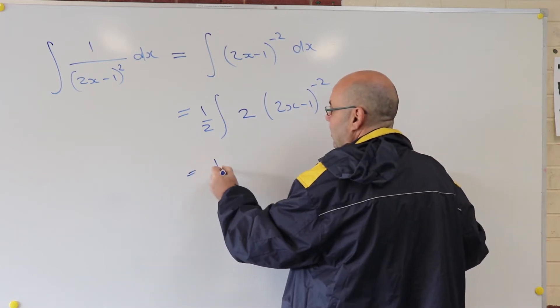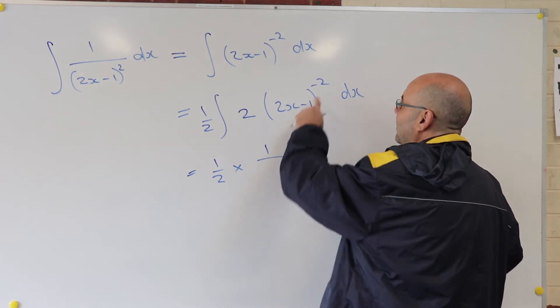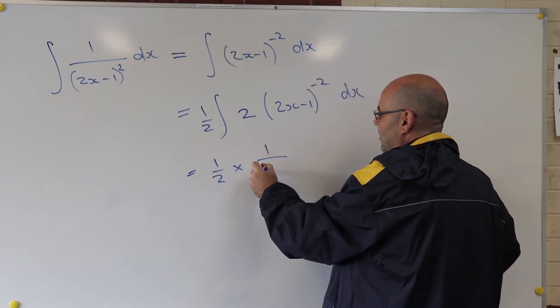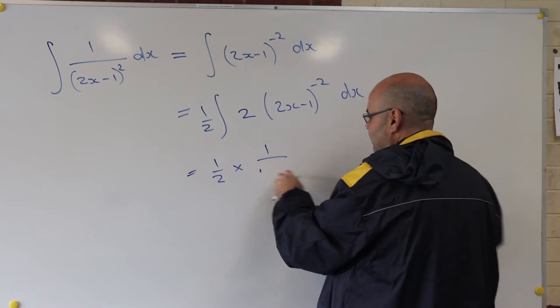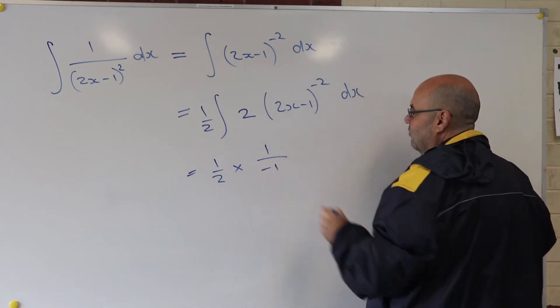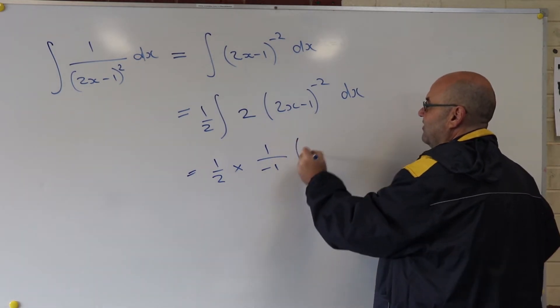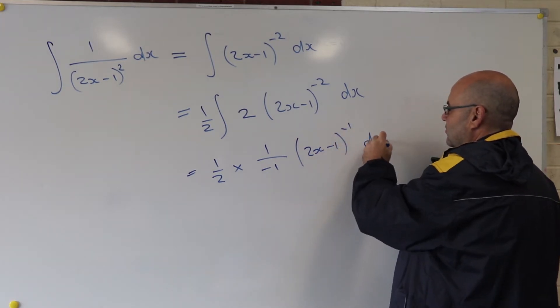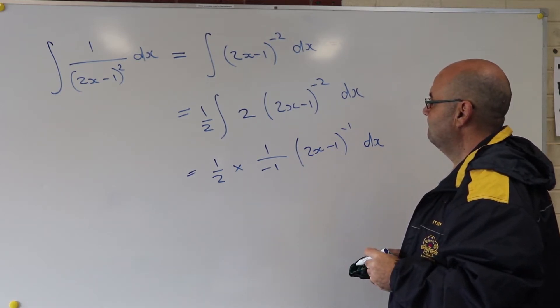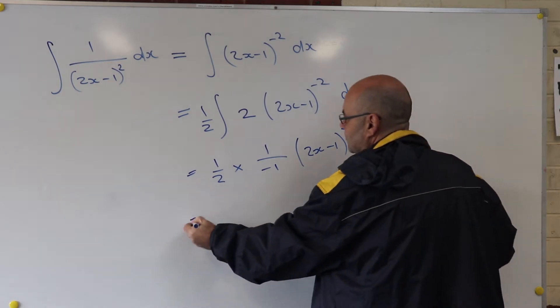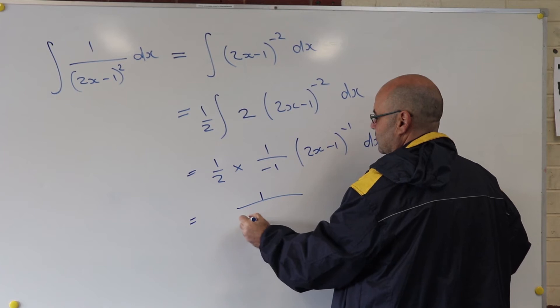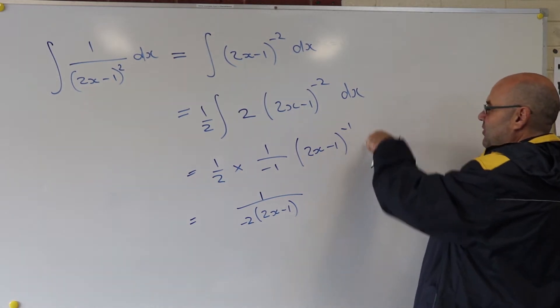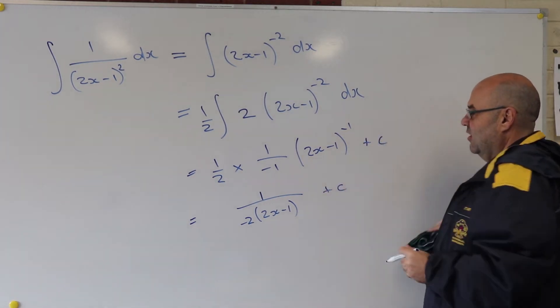And so I just apply that standard form. Well, it says 1 over (n+1). So (n+1) is going to be -1 times f(x) to the power of (n+1). Plus c.